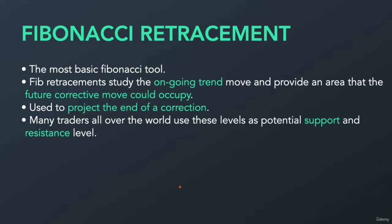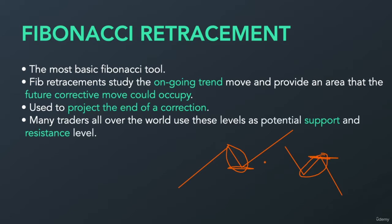Our goal as a trader in an uptrending market is to buy from short-term weakness, and in a downtrending market is to sell from short-term strength. So we will use Fibonacci Retracement to isolate the end of a corrective move, so we can ride the impulsive move to the upside and to the downside.